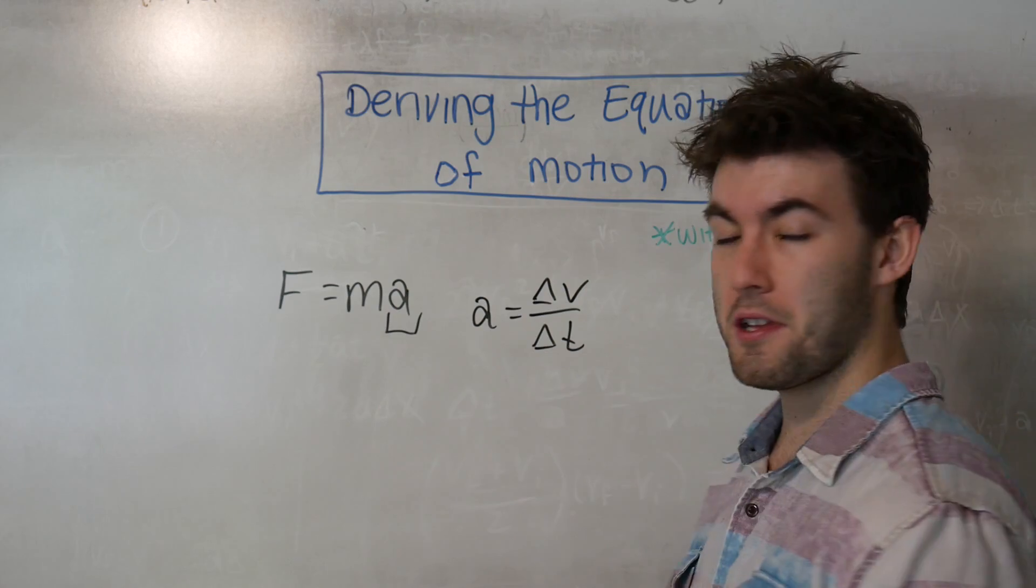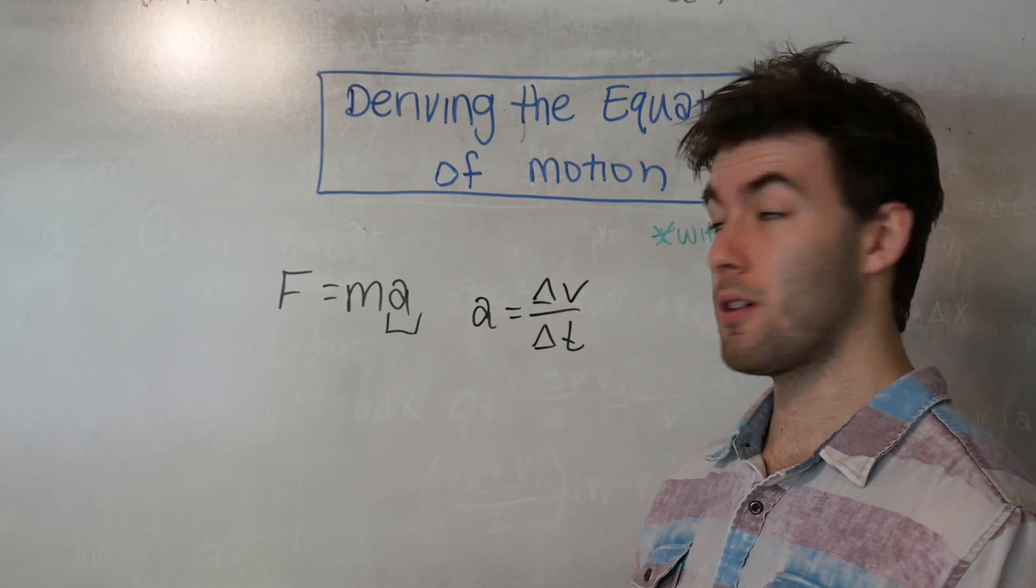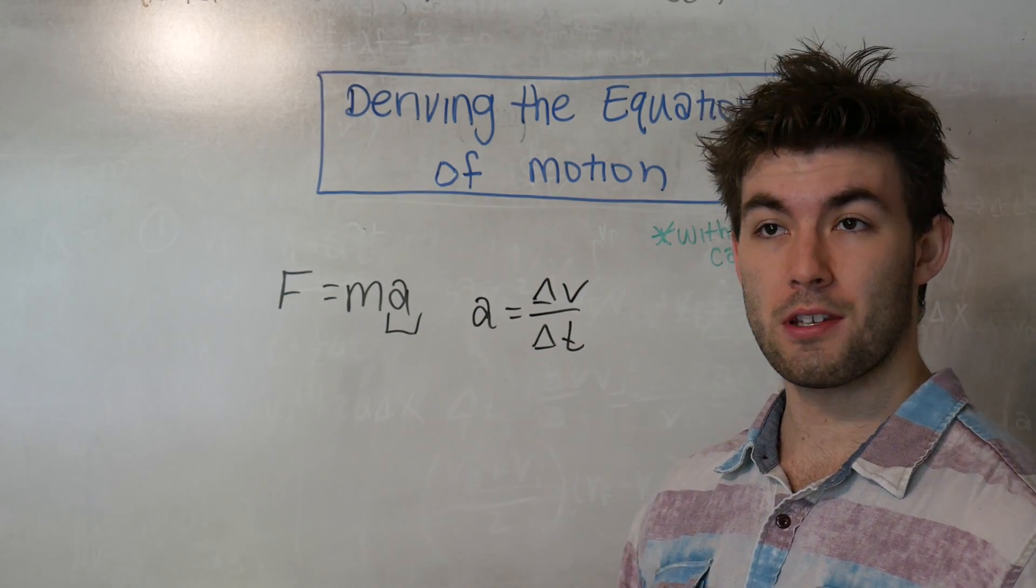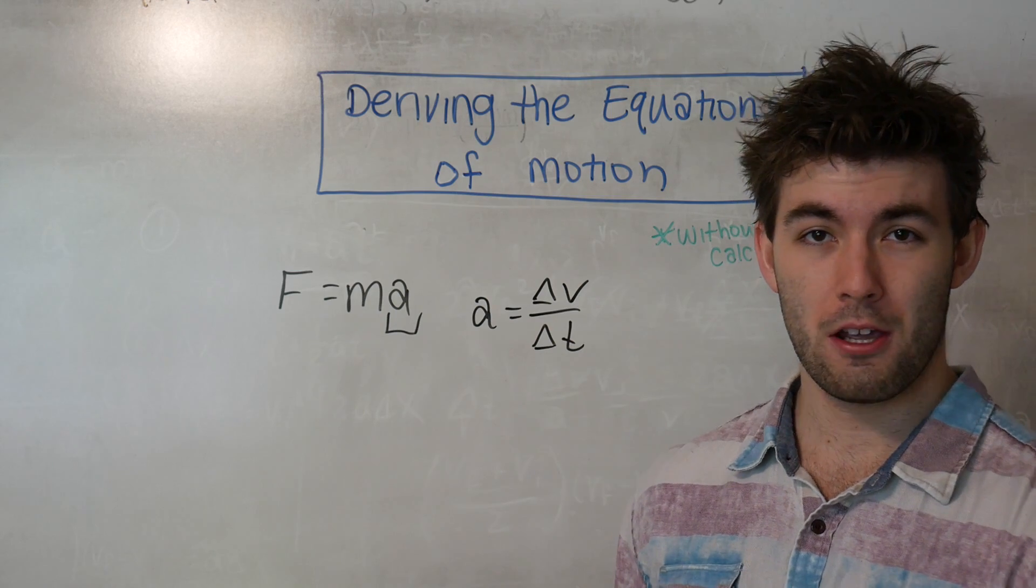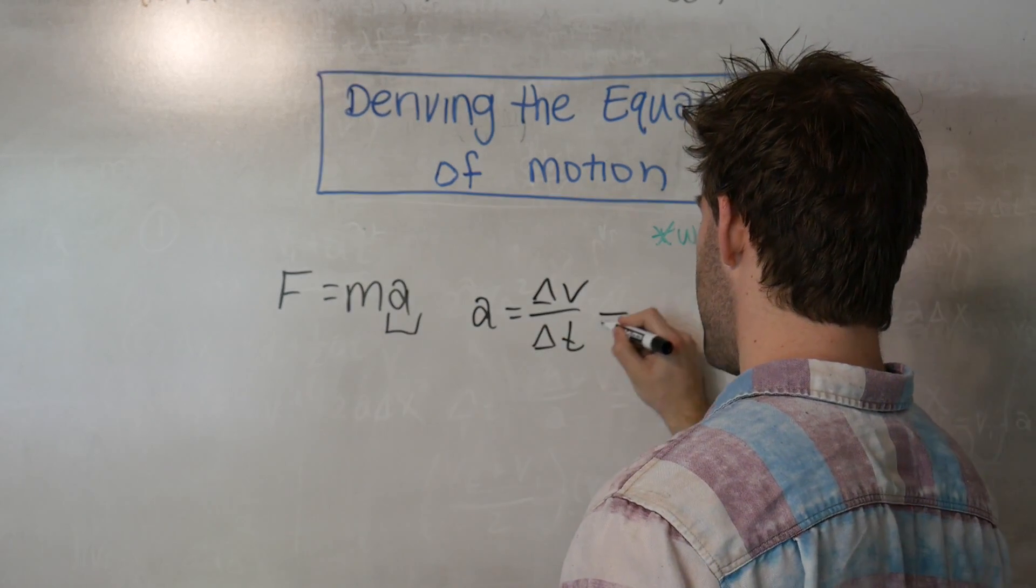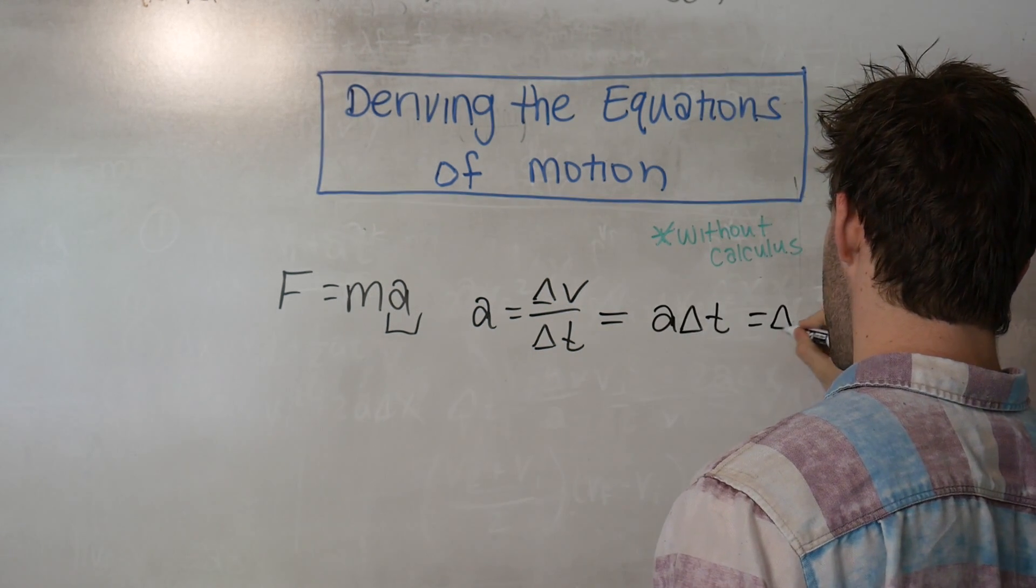So before we go on, the convention is that delta t goes from 0 to t, so delta t is just equal to t. Delta x and delta v are going to go from some xi to some xf and some vi to some vf. So if we multiply both sides by delta t, we get that a delta t is equal to delta v.